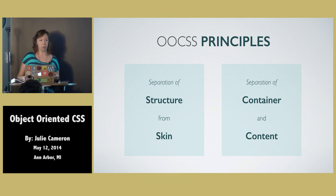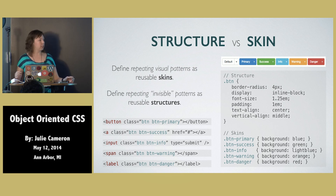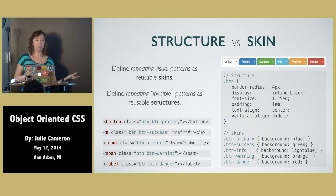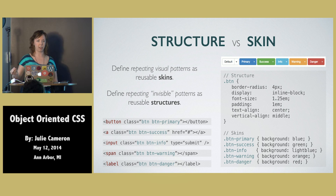In OOCSS, there are two main principles. The first is the separation of structure from skin, and the second is the separation of container and content. For structure versus skin: we've got six buttons that all look roughly the same — the only real difference is the background color and the text color. We want to define the repeating invisible patterns as reusable structure, and the repeating visual patterns as reusable skins. So we take the button structure — border radius, display properties, font size, padding — everything that makes a button generally look like a button, and give that to the button class. Then we create additional classes like 'button-primary' or 'button-success' to handle applying that color or state. Because we're using classes like this, we can apply them to five totally different elements and they'll come out looking the same way.